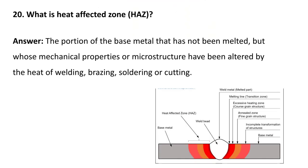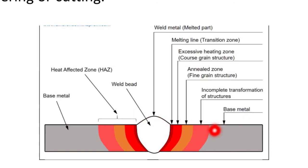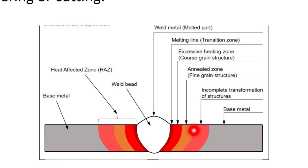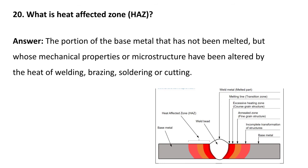The last question: what is heat affected zone? The heat affected zone is the portion of the base metal that has not been melted but whose mechanical properties or microstructure have been altered by the heat of welding, brazing, soldering, or cutting. Here you can see two plates joined by welding — the weld bead has actually melted, but the surrounding portion has not melted; the area where properties have been changed is known as the heat affected zone. These are the top 20 questions which can be asked to welders and production engineers.